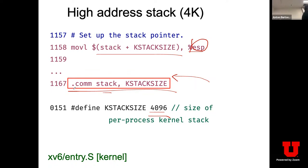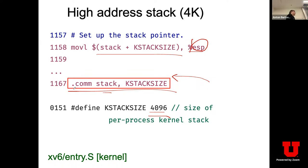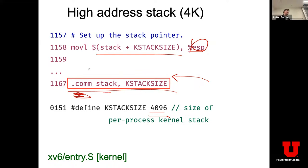If you ask how big the kernel stack is: 4,096 bytes. What happens if you run out of stack? Maybe a page fault if you're lucky, but in our kernel setup it depends on where the variable is in the data section. If you run out, you'll just be overriding data in memory underneath it — sometimes you crash, sometimes you get a wrong answer. It's a good debugging exercise.